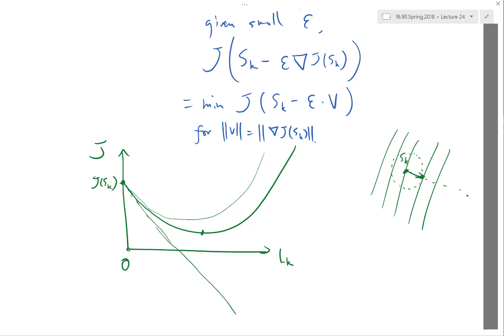Steepest descent is if you only have the gradient and I want to take a small step, which direction is the best. Newton's method is I know the gradient and I know the Hessian. And if I want to take as big a step as to minimize the second order Taylor series approximation, which direction is the best. That's basically the overall idea.